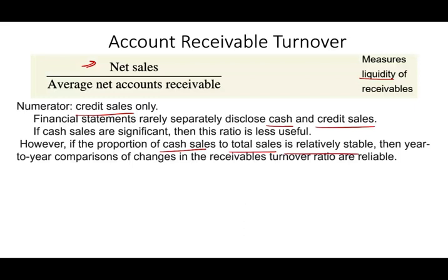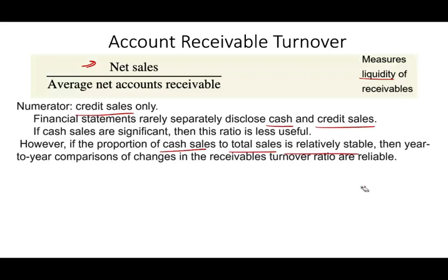For example, let's assume that for every $100 in sales, 30% is cash and 70% is credit sale. So if that ratio is stable — on average, every year, 30% cash and 70% receivable — then this ratio makes sense. The point is we always have to look at ratios and dissect them to see if they make any sense or not.